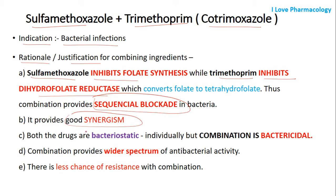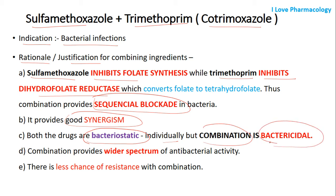Both drugs increase synergistic activity. Both sulfamethoxazole and trimethoprim are bacteriostatic in nature when given alone. However, when combined together, they are bactericidal in nature. This combination provides a wide spectrum of antibacterial activity, and there is less chance of development of resistance to this combination.